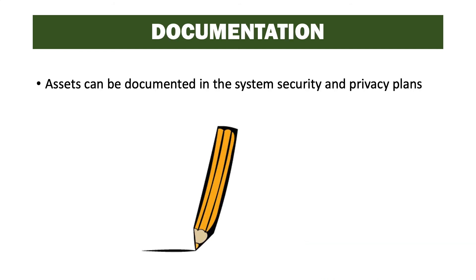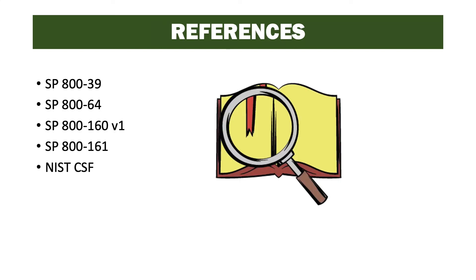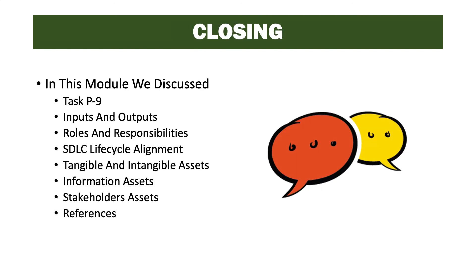Assets can be documented in the system security and privacy plans. We want to make sure we document what the assets are that are impacted by the system. References for this task include Special Publications 800-39, 64, 160 Volume 1, and 161, and of course the NIST Cybersecurity Framework. In this module we discussed Task P10, its inputs, outputs, roles, responsibility, SDLC lifecycle alignment, cybersecurity framework alignment, tangible and intangible assets, information assets, stakeholder assets, and references.